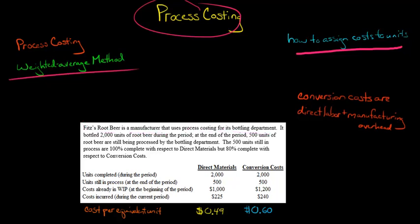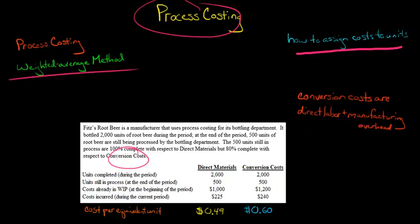They might have other departments, but let's just focus on the bottling department. They bottled 2,000 units of root beer during the period, and then at the end of the period, they still have 500 units that are still being processed. Now the 500 units still being processed are 100% complete with respect to direct materials, but with respect to conversion costs — which are direct labor plus manufacturing overhead — it's only 80% complete.